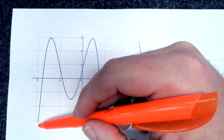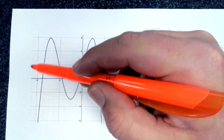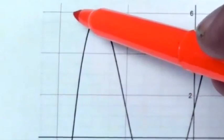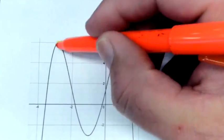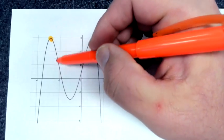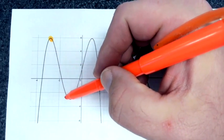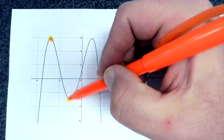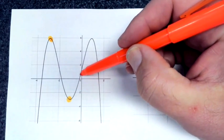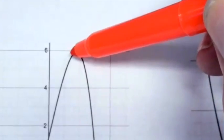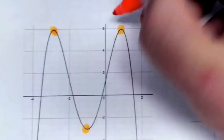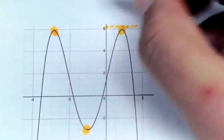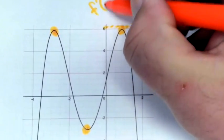Will you stop me when I get to a critical point? Will you stop me when I get to the next critical point? Will you stop me when I get to the next critical point? So those are the critical points. Each of these critical points is a place where f prime of x is equal to 0 in this instance.